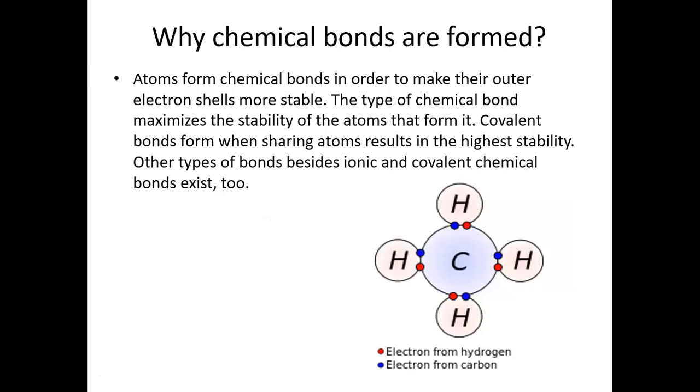To understand why chemical bonds are formed, atoms form chemical bonds in order to make their outer electron shells more stable. You need to get stability for molecules or atoms through the electron shell to provide stability. This type of chemical bond maximizes the stability of the atom that forms it.